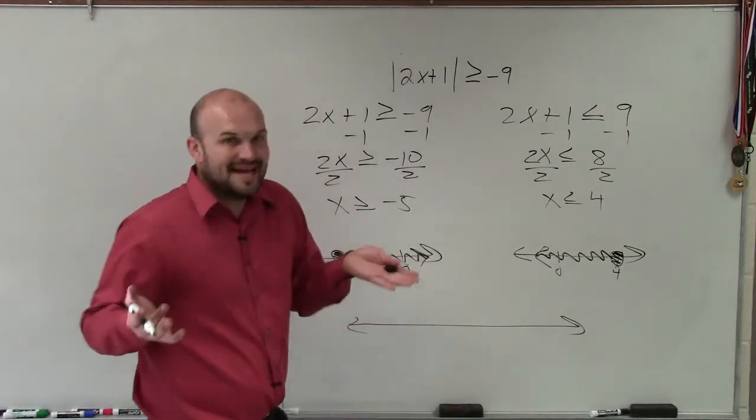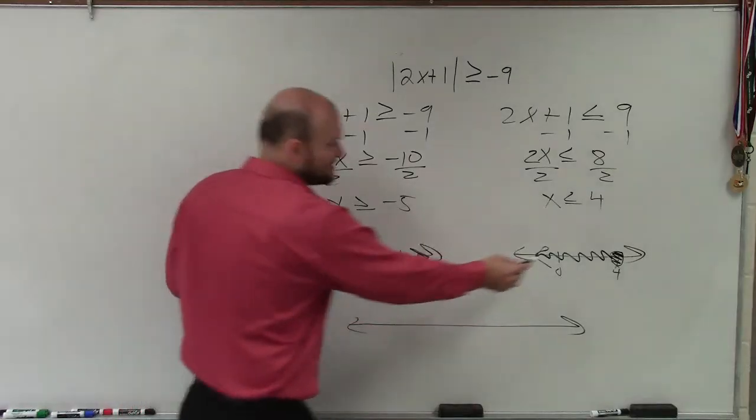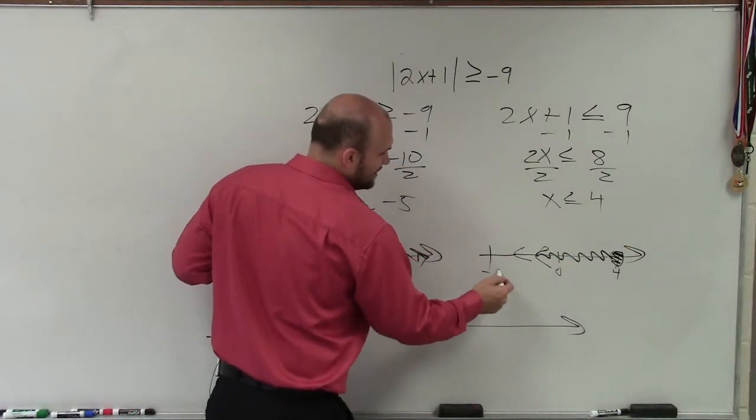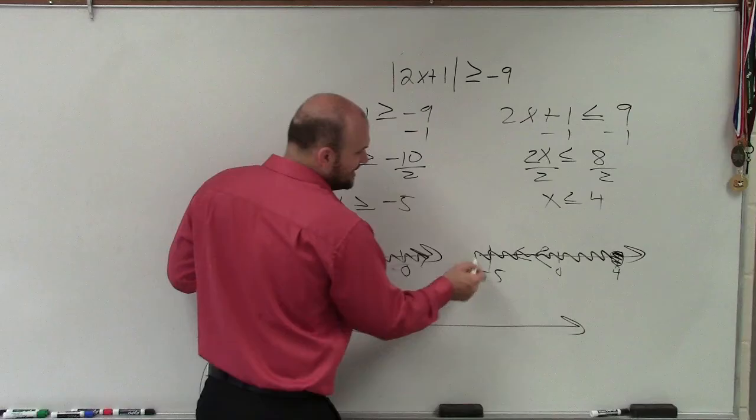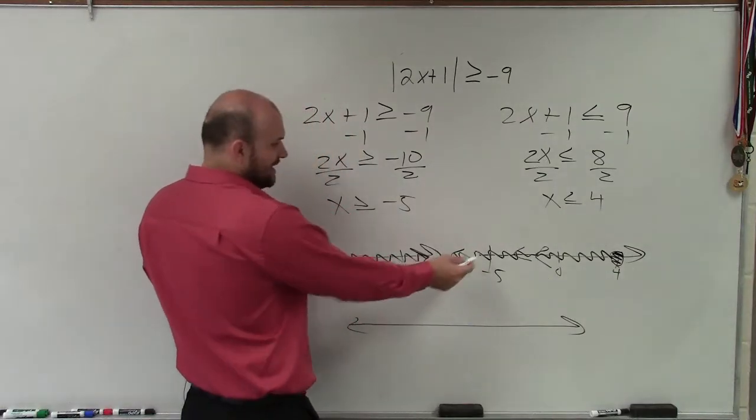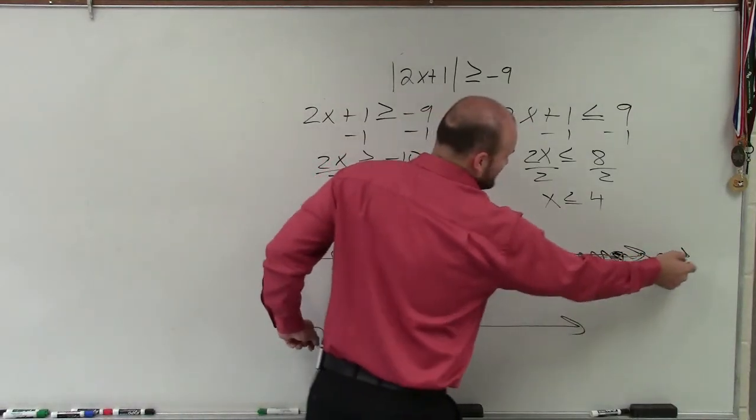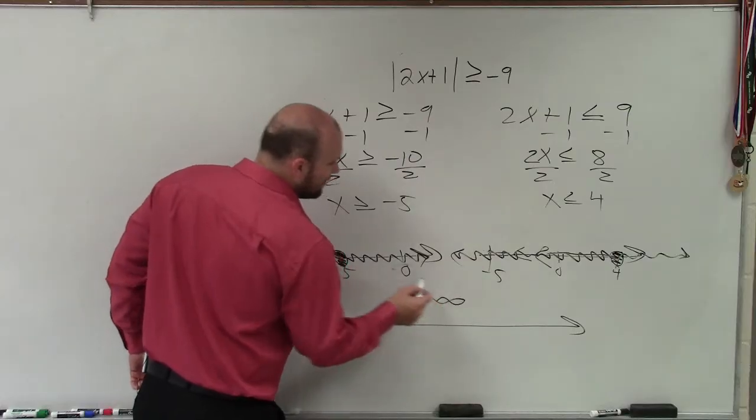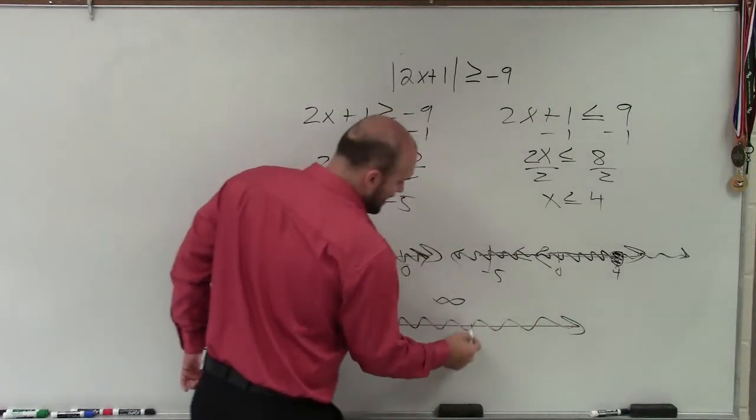Well, that's going to contain all the possible numbers, right, because this is going to continue. Let's pretend here's negative 5. This is going to continue past negative 5. And then at negative 5, this is going to continue past 4. So I have all real solutions for my graph.